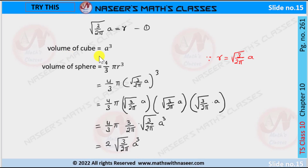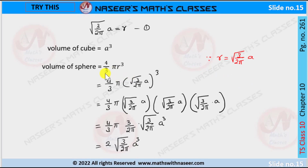The volume of the cube is a³ and the volume of the sphere is (4/3)πr³. We now substitute r = a·√(3/2π) into the sphere volume equation, writing it as (4/3)π · (a·√(3/2π))³.